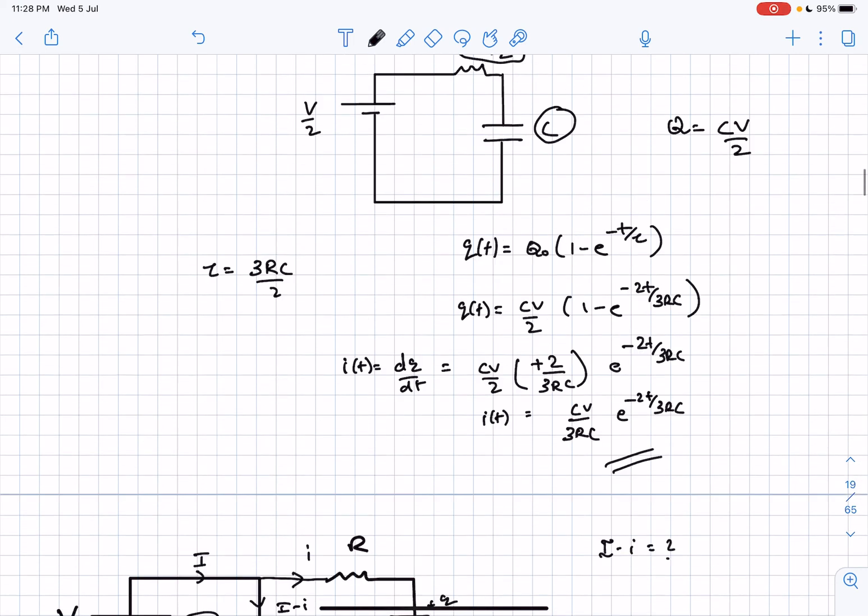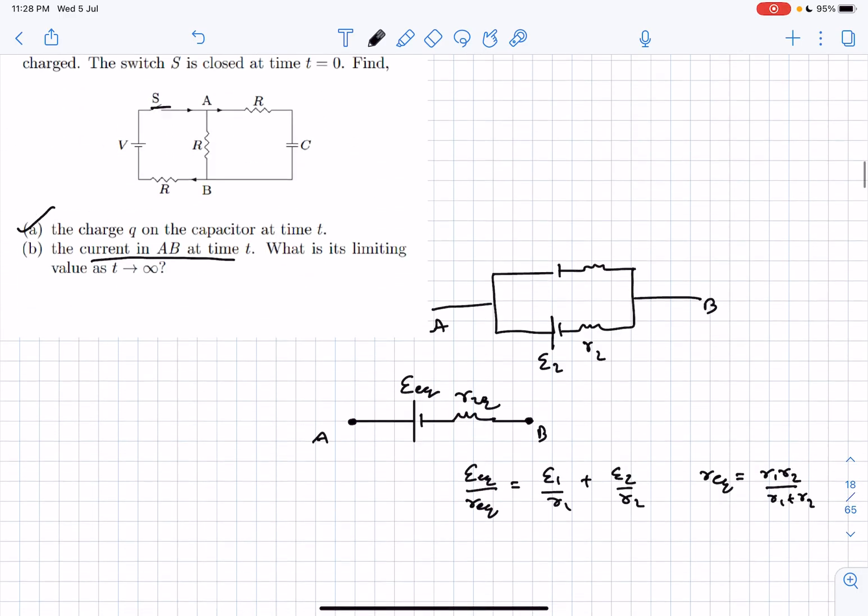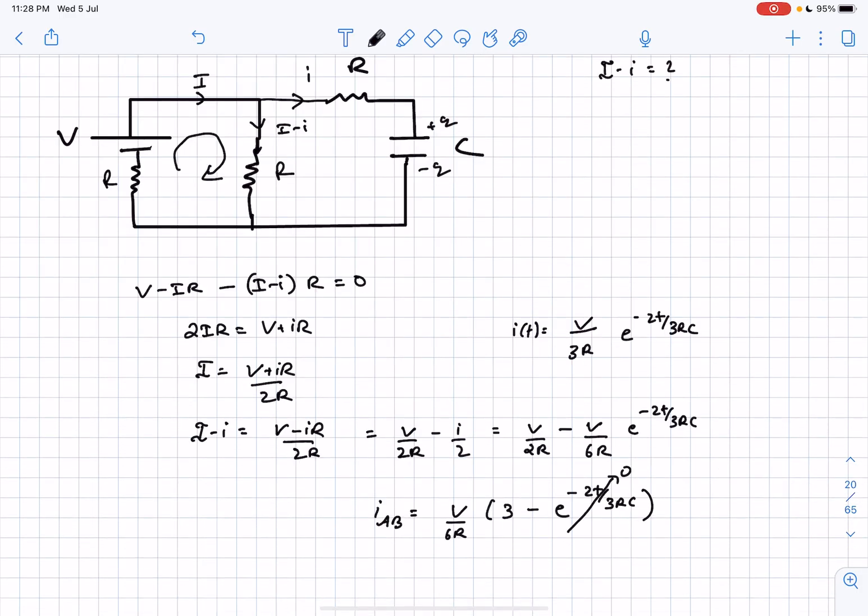They also ask the limiting value of the current AB. After t tending to infinity, this term would tend to 0 and the current would come out to be V divided by 2R.